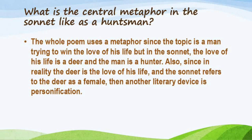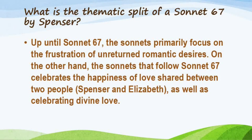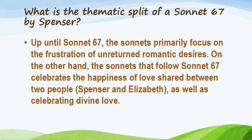Sonnet 67 is very important from an examination perspective and also because Edmund Spenser has created a thematic split with it. Up until Sonnet 67, the sonnets primarily focus on the frustration of unreturned romantic desires — Spenser pursuing Elizabeth Boyle without the desired romantic response. The sonnets that follow Sonnet 67, on the other hand, celebrate the happiness of love shared between Edmund Spenser and Elizabeth Boyle, as well as celebrating divine love.